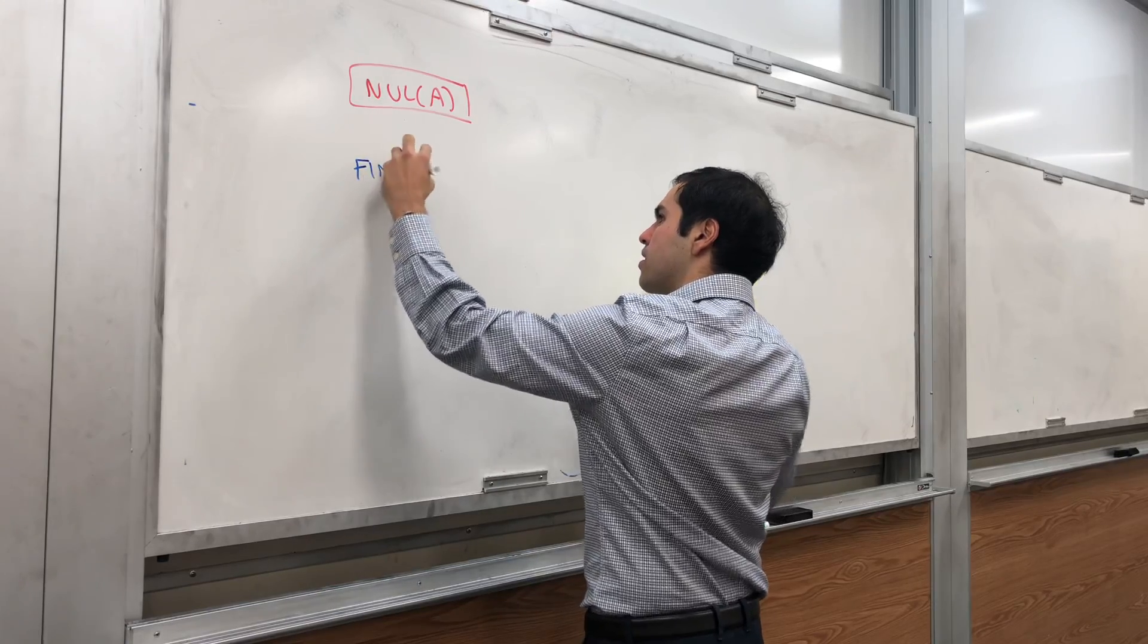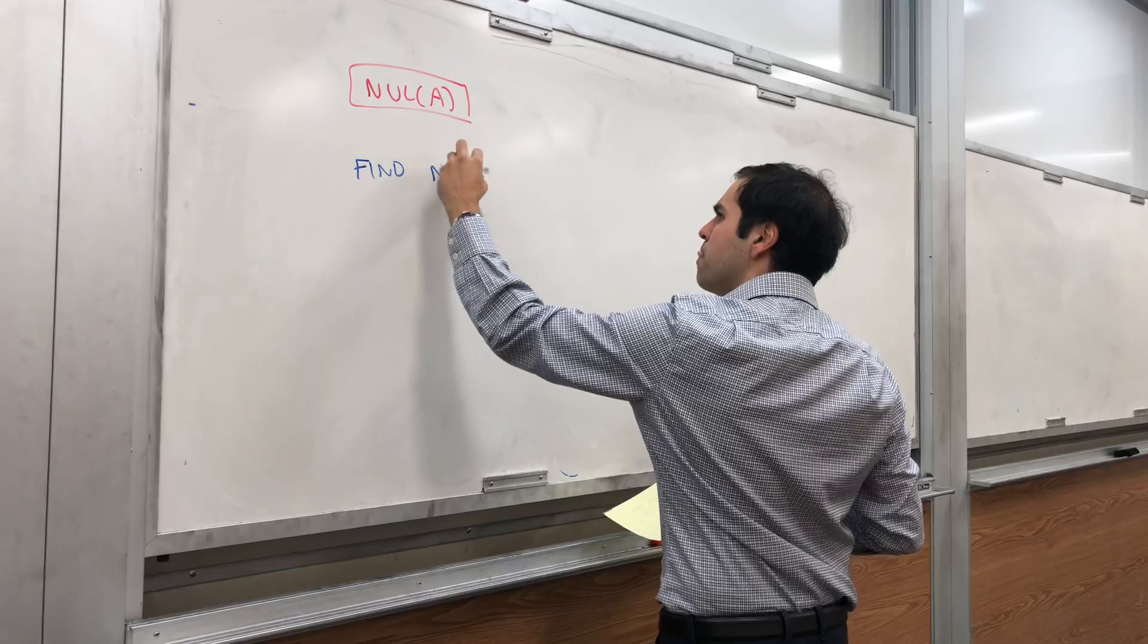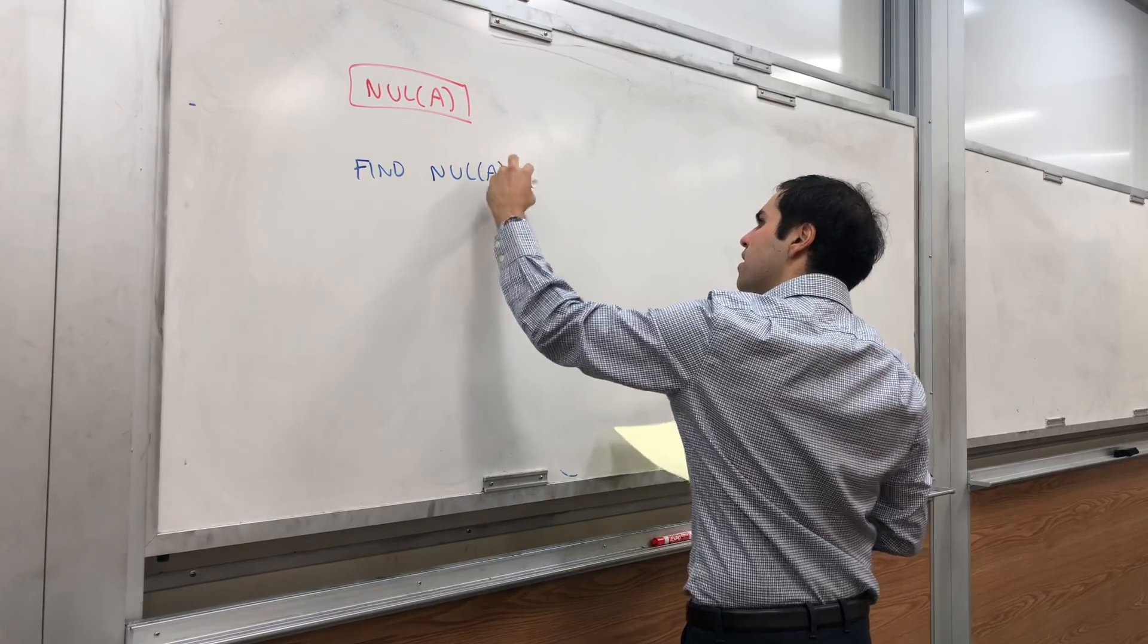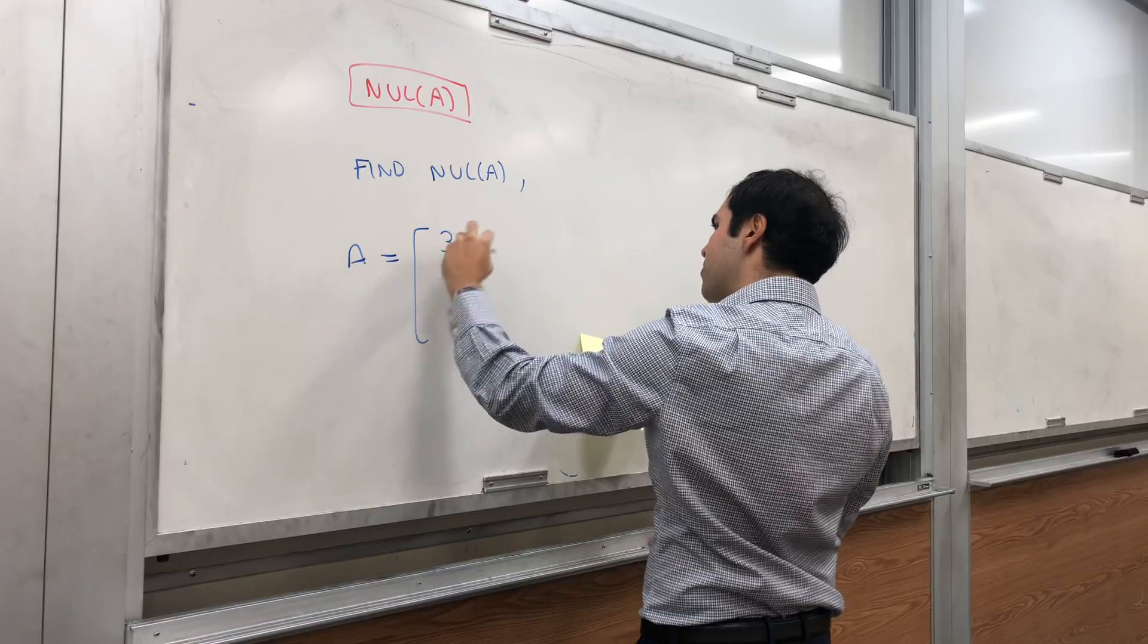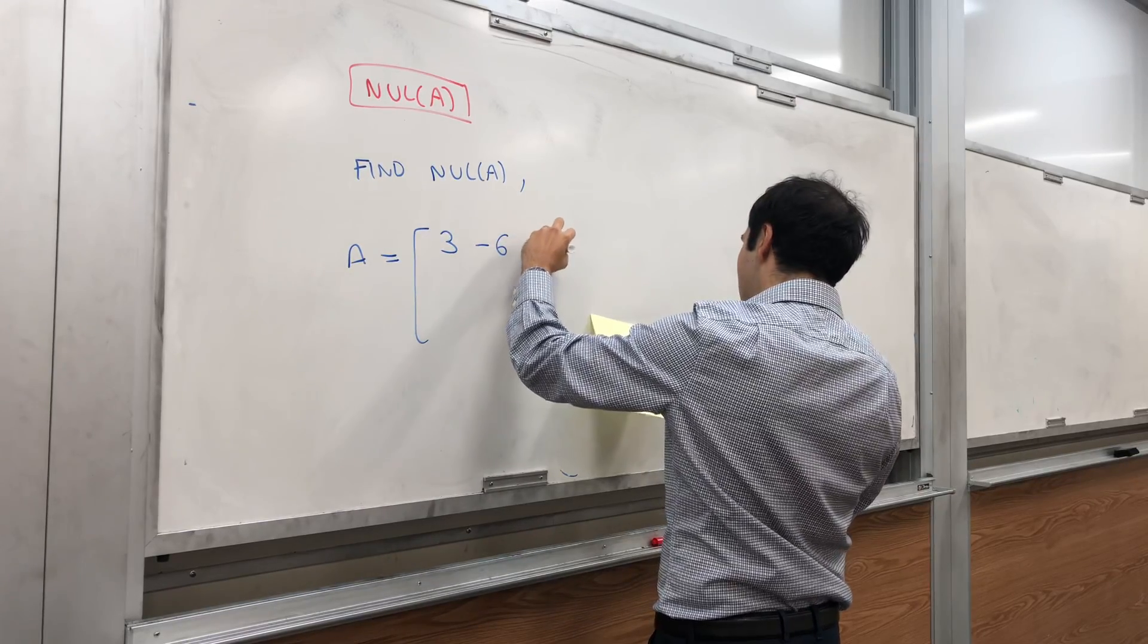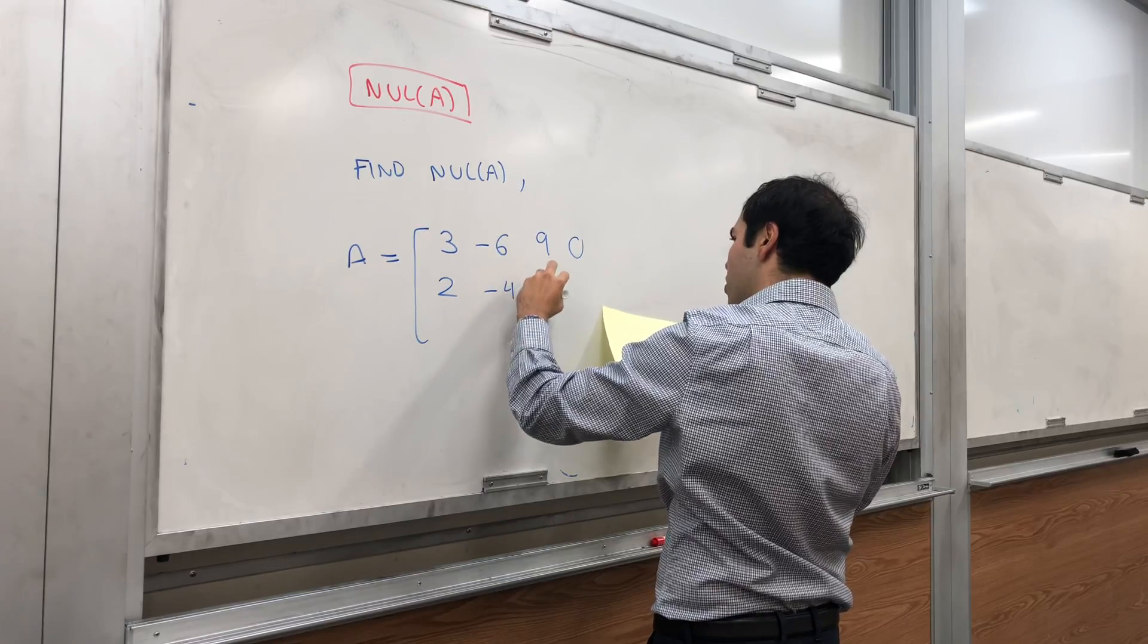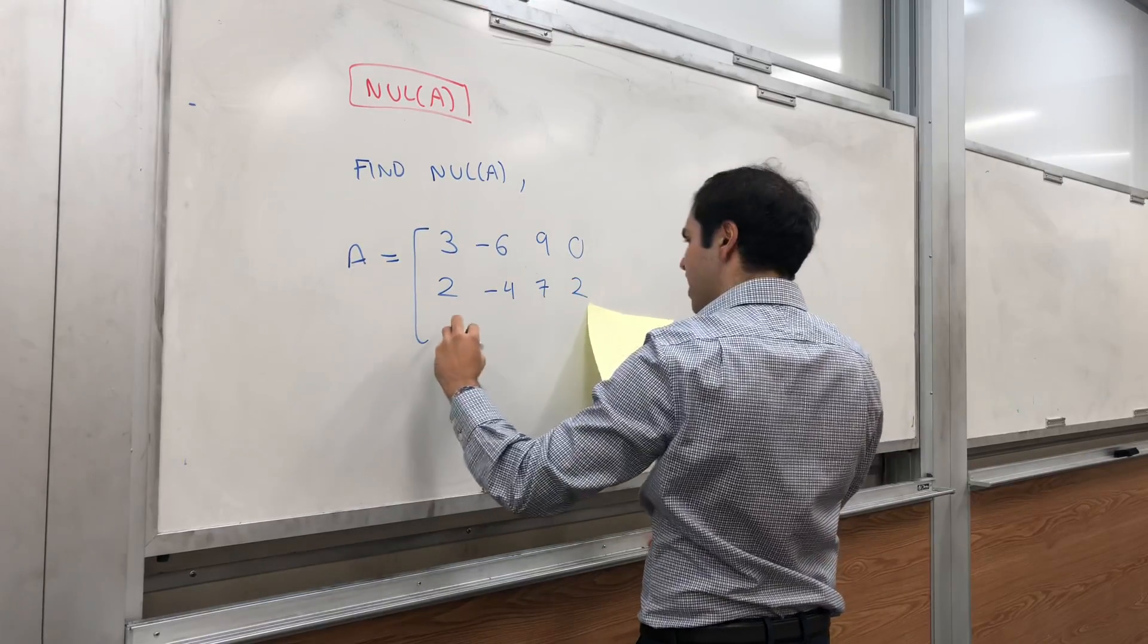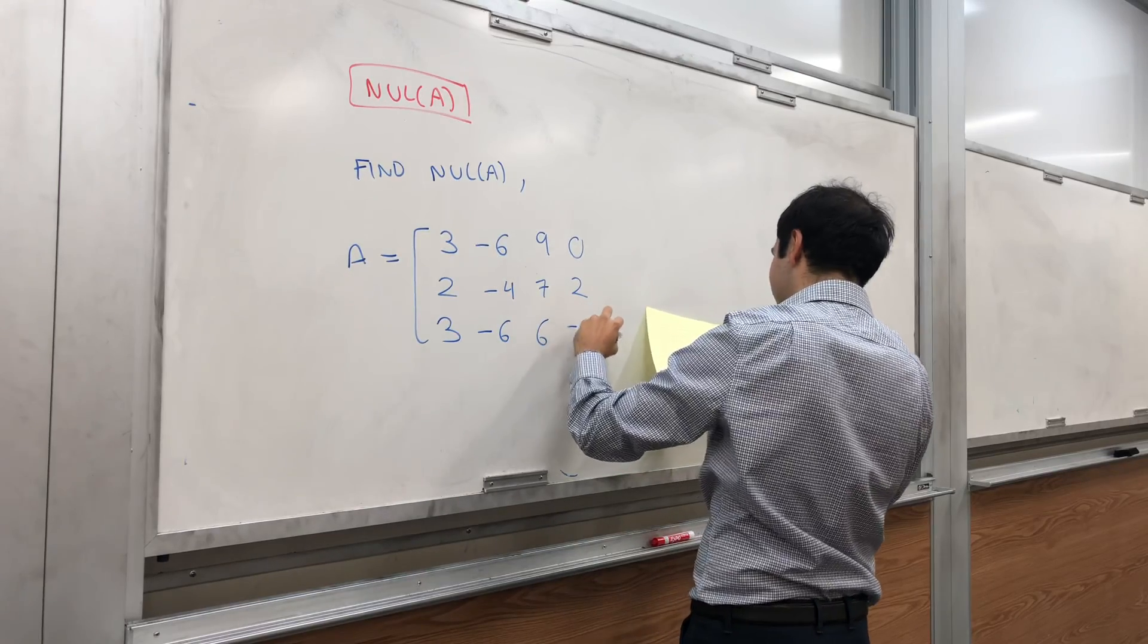So, for instance, let's find null of A, where A is simply the matrix: 3, minus 6, 9, 0, and 2, minus 4, 7, 2, and 3, minus 6, 6, minus 6.